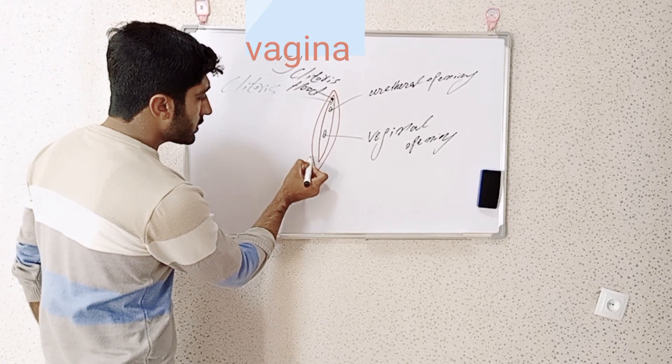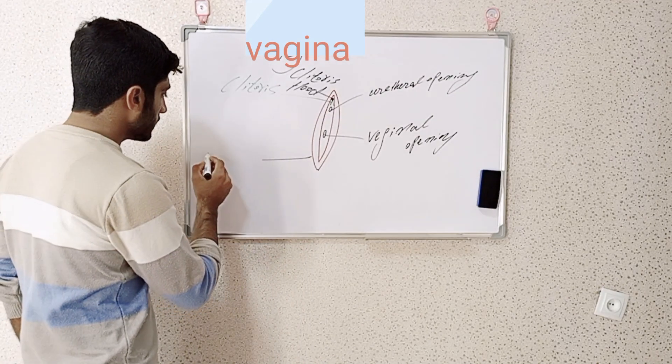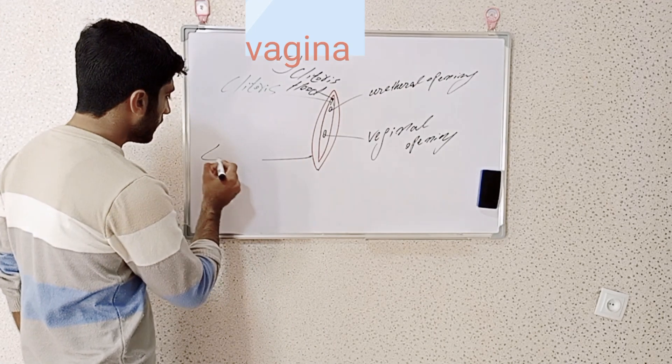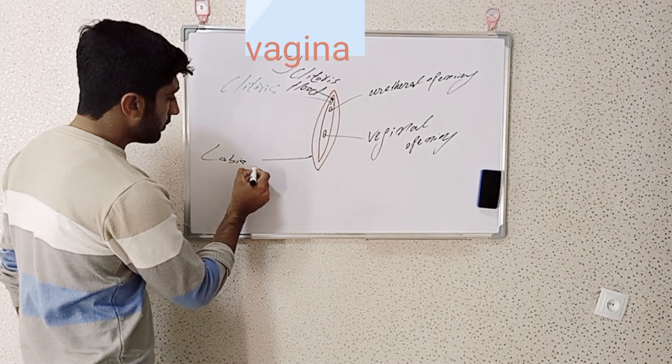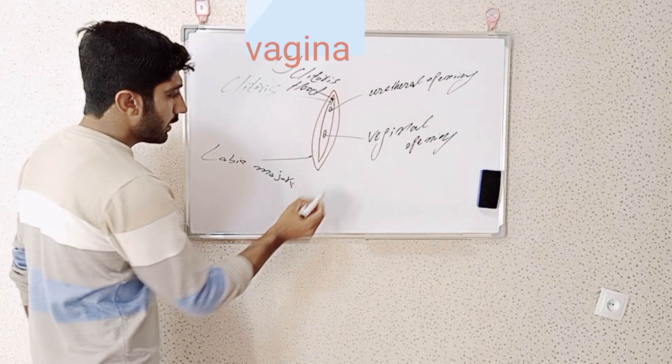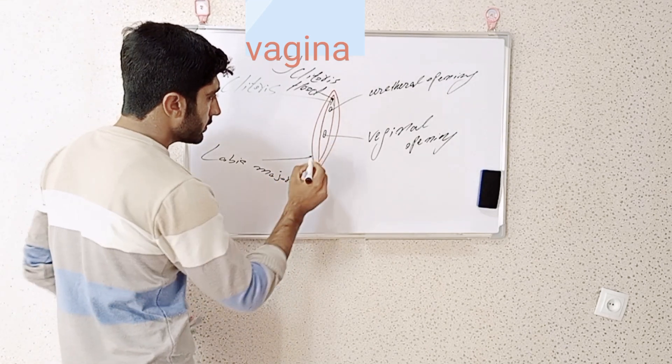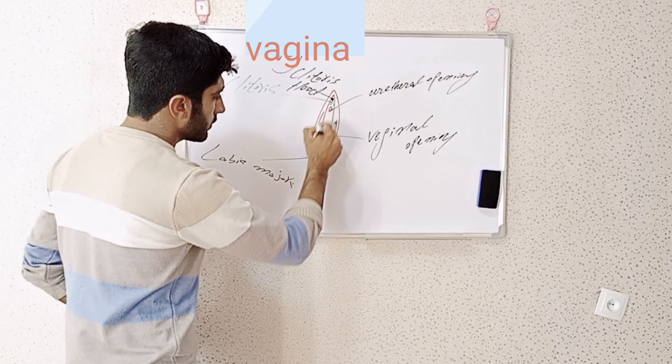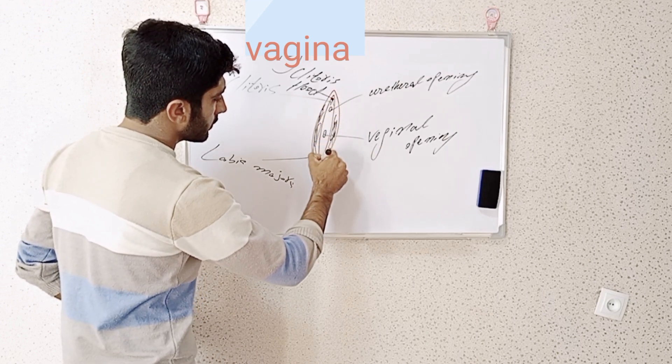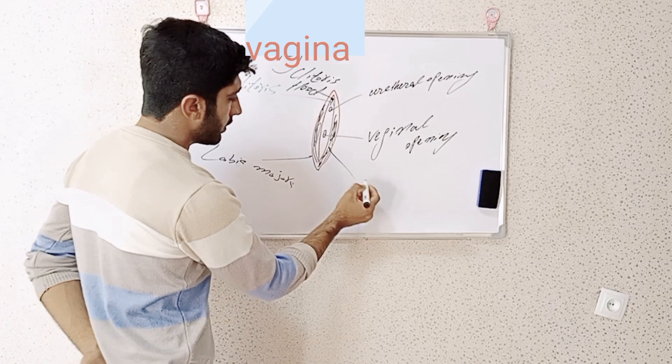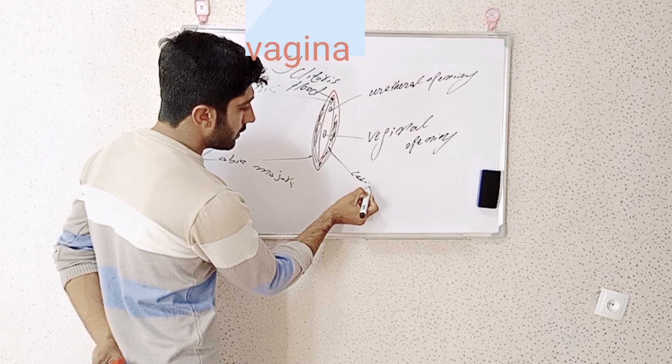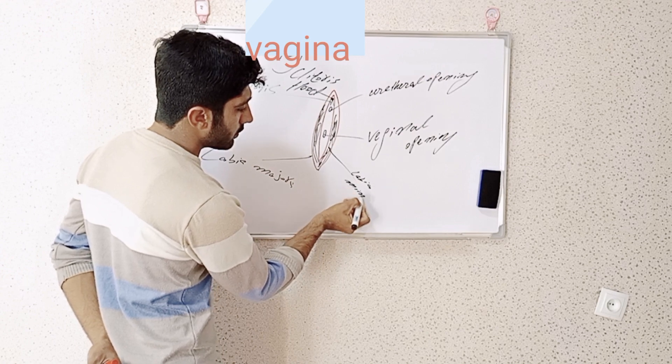The outer side of the vagina is called the labia majora, and the inner side of the vagina is called the labia minora.